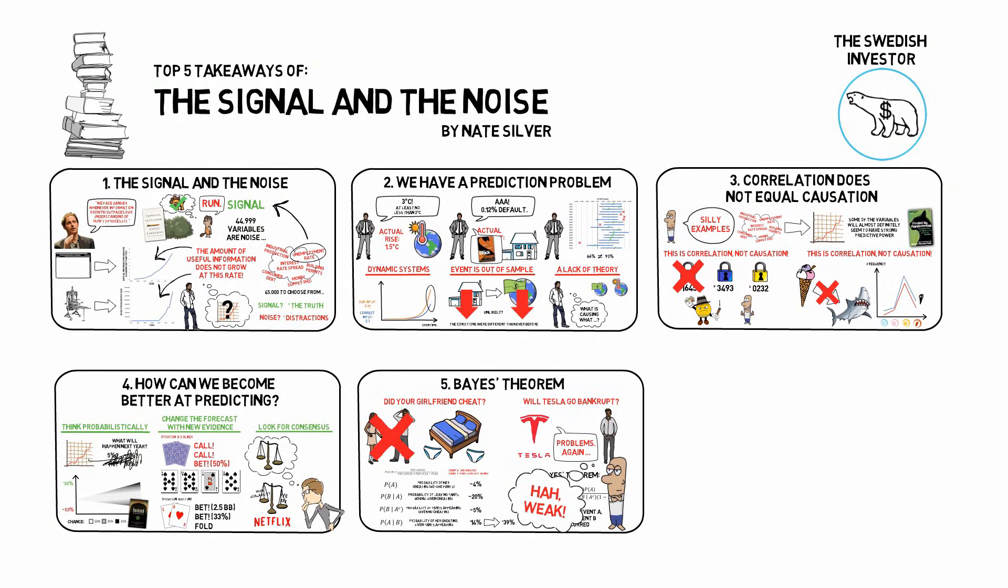Here's a summary in less than 53 seconds. The signal is the truth. The noise is what distracts us from the truth. More data means more noise in relation to the signal. Some situations are particularly difficult to forecast, especially when an event is out of sample, we are forecasting dynamic systems, and when there's a lack of theory in the domain. Correlation does not mean causation. Make sure that there's a logical explanation for the mathematical relationship before using it in your predictions. We can become better at predicting by thinking probabilistically, updating our forecasts when we are presented with new evidence, and by looking for consensus. Use Bayes' theorem, or at least think in a Bayesian way, when new information presents itself.